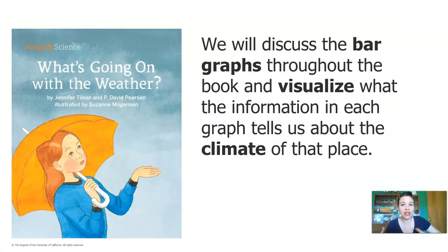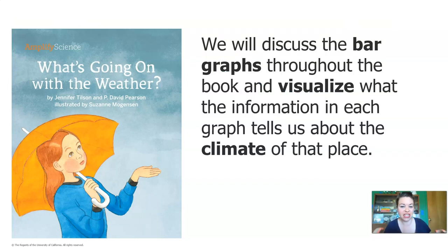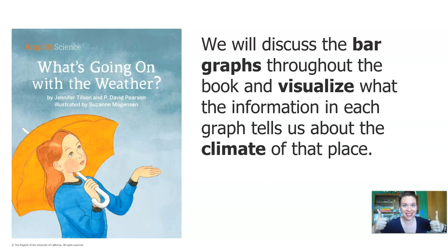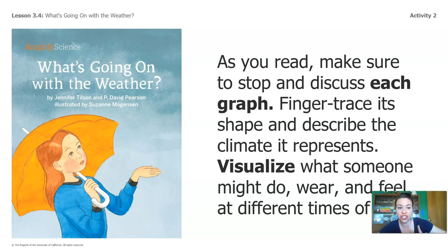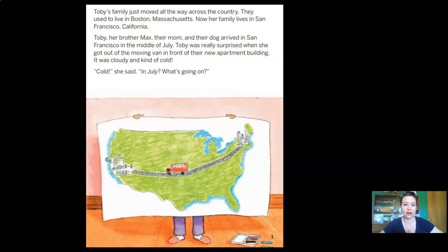So while we read, we're going to discuss the bar graphs throughout the book and we're going to visualize what the information in each graph tells us about the climate of that place. Throughout the story there will be bar graphs and we are going to study them together. We're going to stop and finger trace the shape of each graph and describe the climate it represents. Are you ready? Let's read.